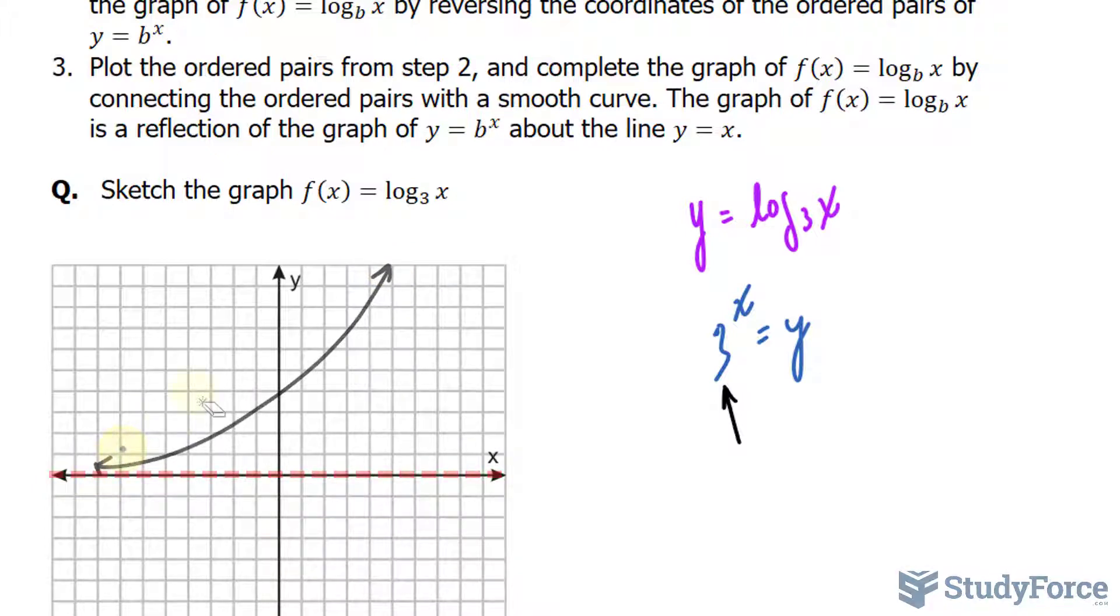Now that's important for us, because all we have to do from here is choose three random x values. Let's say x = -1, 0, and 1, and this will give us some reference points, which we can use moving on to step 2.